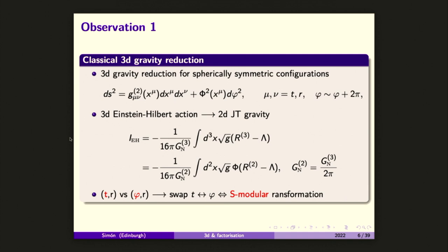Sometimes JT is presented in a weird way depending on the picture you take. If you do the most naive thing — take texture gravity, axially symmetric, and do a two-dimensional reduction classically — what you obtain is the JT action. I'm focusing on the Einstein-Hilbert action. The reason I'm stressing this picture is because in part of the literature, the JT Schwarzian action appears in Lorentzian coordinates in the phi-R plane, not in the T-R plane. This JT is already Lorentzian.